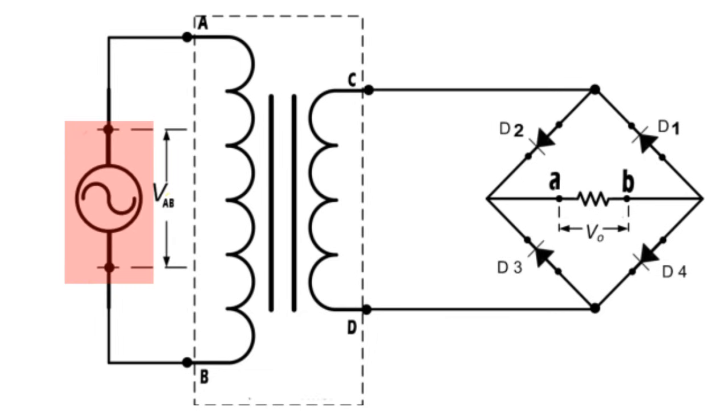It consists of an AC supply, a transformer to change the level of voltage, four diodes named as D1, D2, D3, D4, and a DC electric load which could be an electronic device which runs on DC, a DC motor, or an electric bulb.